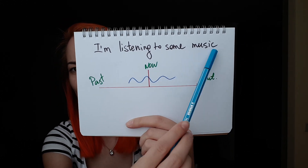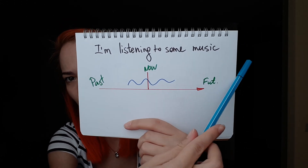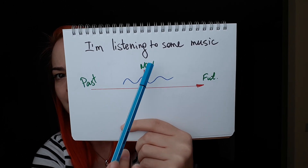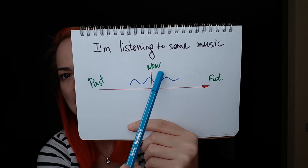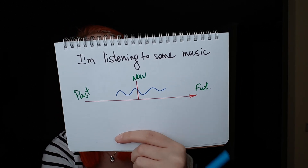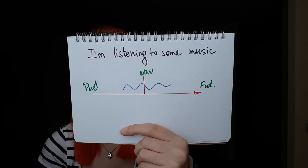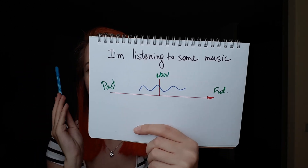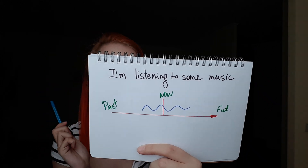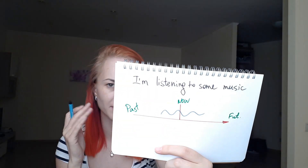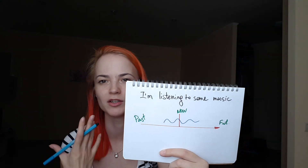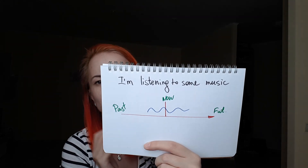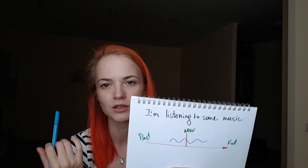The example is: 'I'm listening to some music now.' You draw a timeline — past, now, and future — and you mark here that it's happening right now. We use present continuous when we talk about some events which are in progress and happening right now at the moment of speaking.